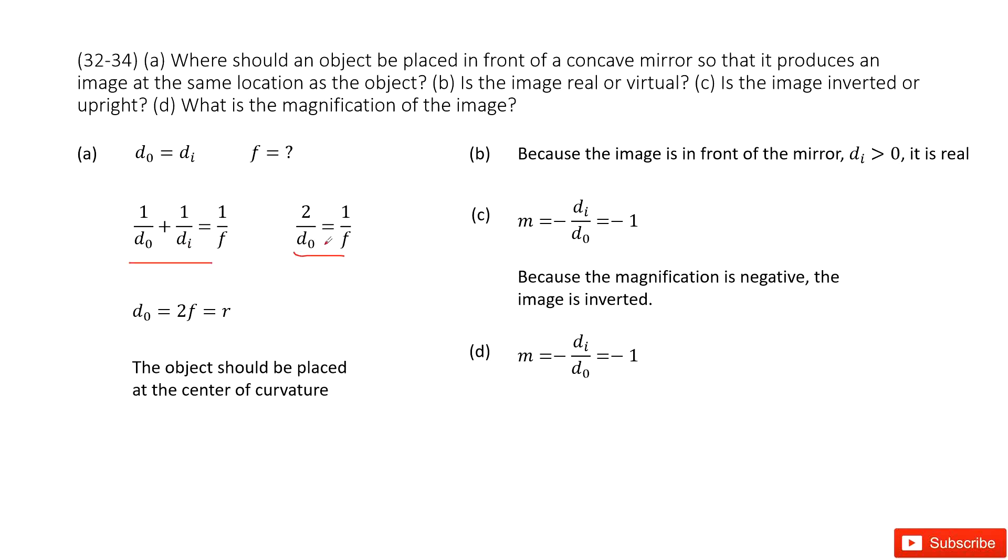From this one, we can see d0 equals 2 times f, which equals r, the radius of the mirror. So the object should be placed at the center of this mirror.